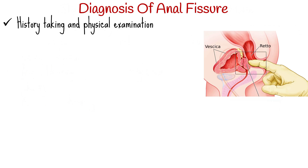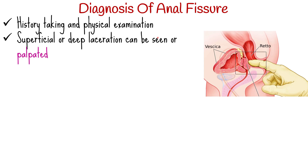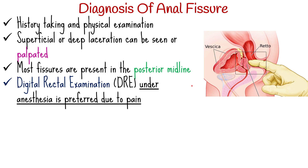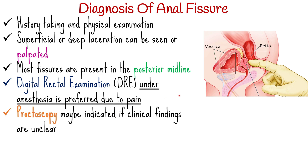Diagnosis can be made by taking a detailed history that involves ruling out risk factors, and from clinical examination. Superficial or deep laceration in the anterior, lateral, or posterior anal canal can be seen or palpated. Most fissures are present in the posterior midline. Often patients will refuse a digital rectal examination due to intense pain, and examination under anesthesia may be necessary for diagnosis. Proctoscopy may be indicated if clinical findings are unclear or if symptoms persist despite adequate treatment.